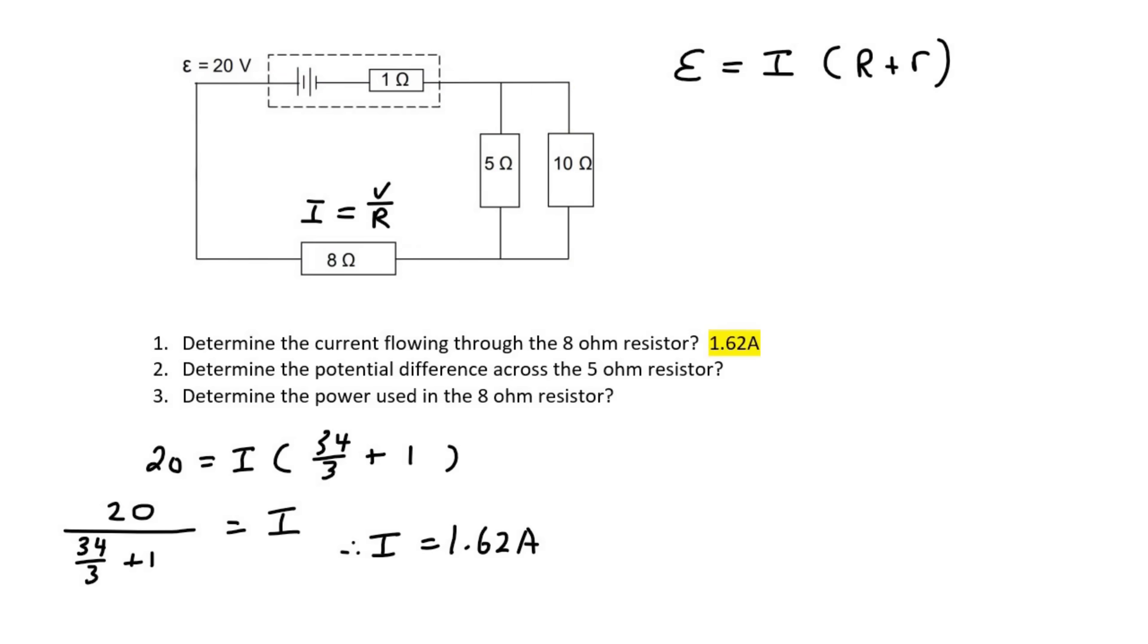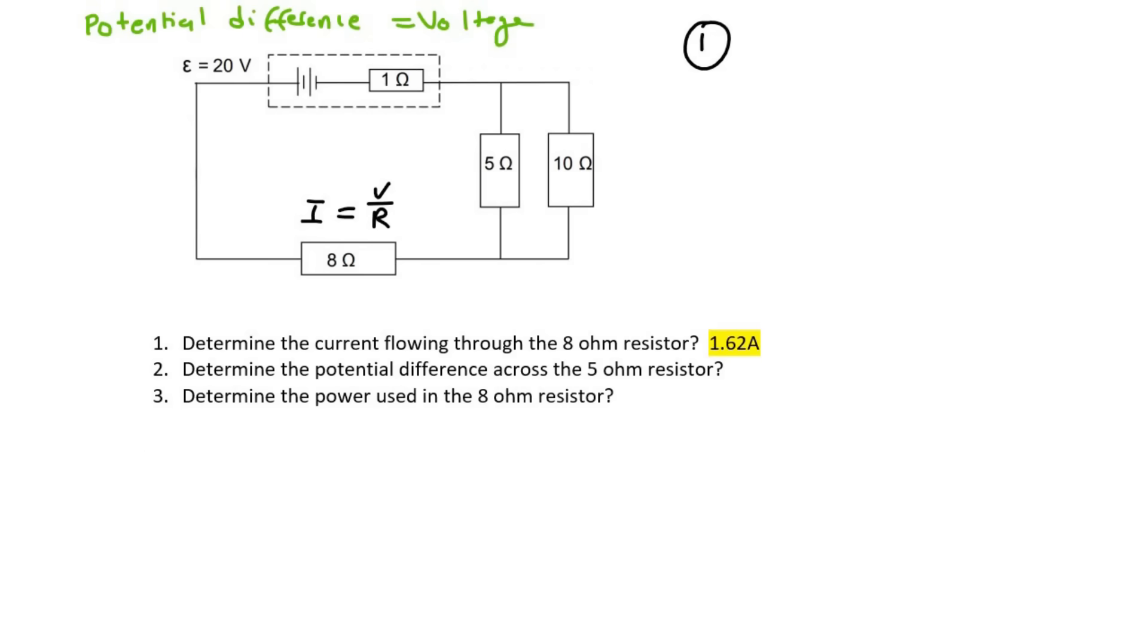Next question says, determine the potential difference. Remember that potential difference is just another word for voltage. And so it says, determine the potential difference across the 5 ohm resistor. So there are multiple ways that you can do this question. I'm going to show you two methods. Right, so method number one. What you can do is we should realize that the voltage for this branch and this branch is the same. So what we do, if you like, is you just pretend that this is just one resistor.